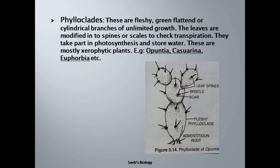Next comes another modification — phylloclades. Phylloclades are fleshy, green, flattened or cylindrical branches of unlimited growth. The leaves are modified into spines or scales to check transpiration; they take part in photosynthesis and store water. These are seen in xerophytic plants like Opuntia, Euphorbia, Casuarina, cactus, etc. In Opuntia, the stem is modified into green, thick, fleshy parts which perform photosynthesis — meaning the stem has taken over the function of leaves because the leaves are modified into spines.